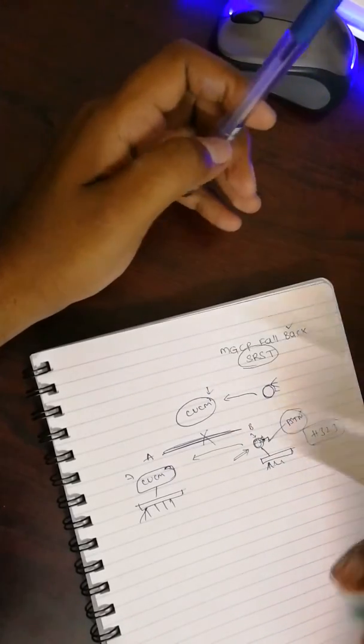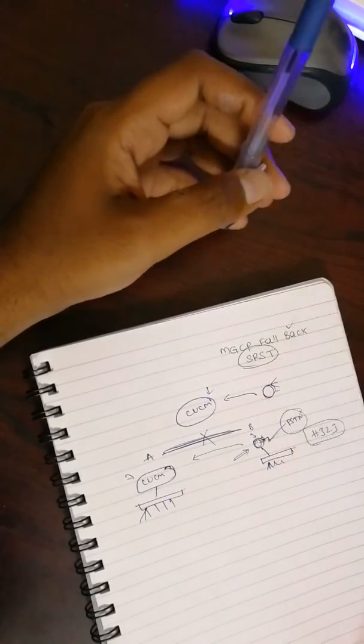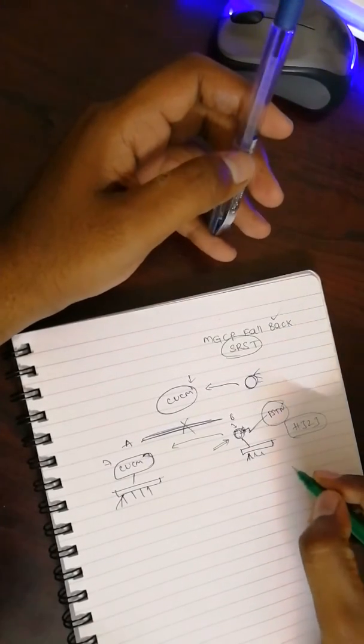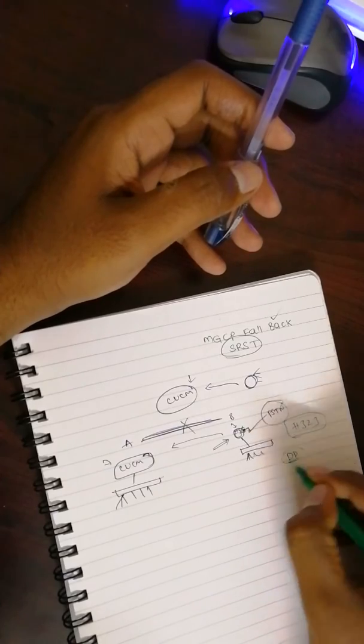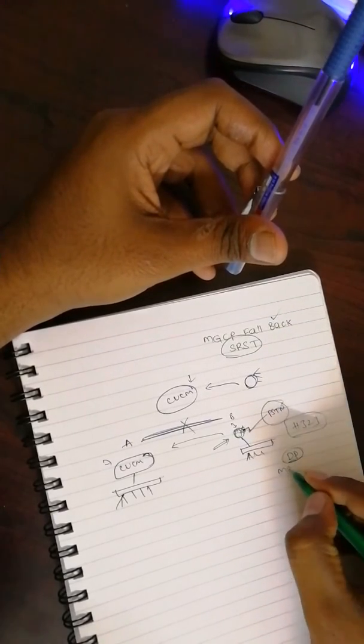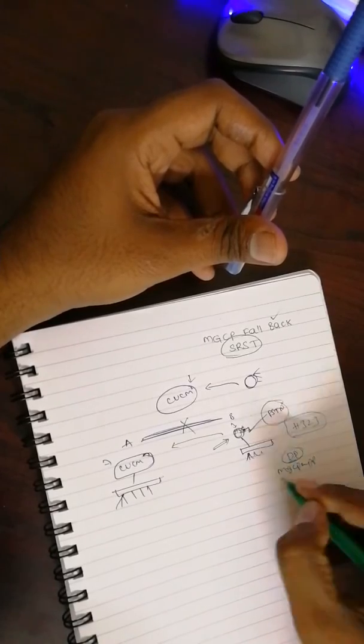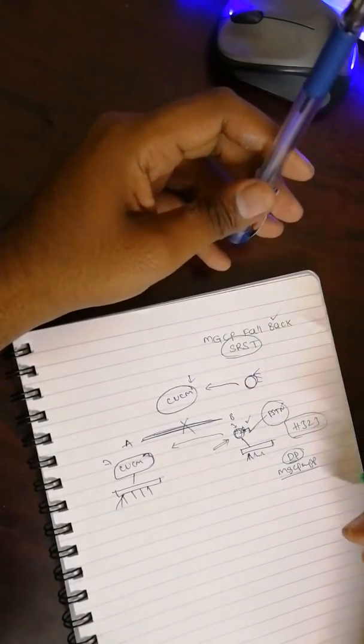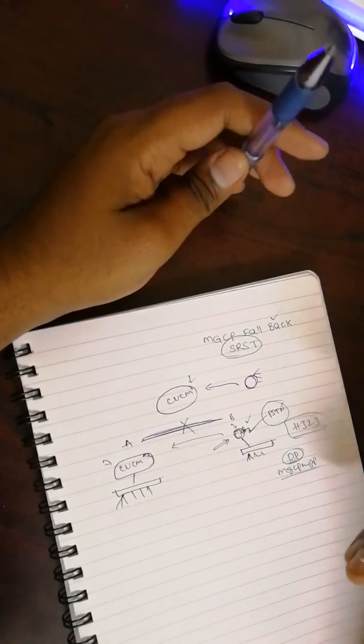To do that, what we can do is in that particular dial peer where we have the serial interface configured, we can mention MGCP app. When we mention MGCP app, that means this particular T1 or E1 link is configured as an MGCP controlled interface.